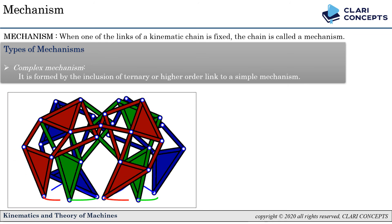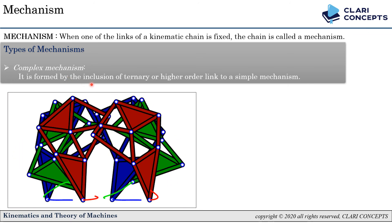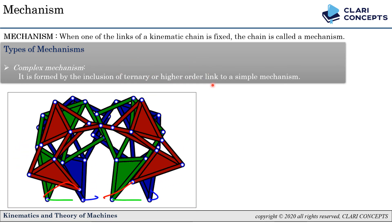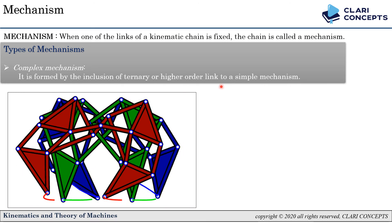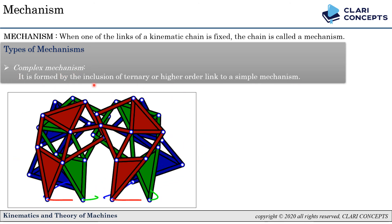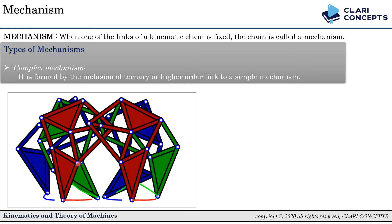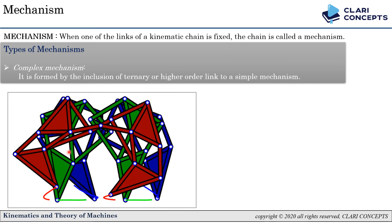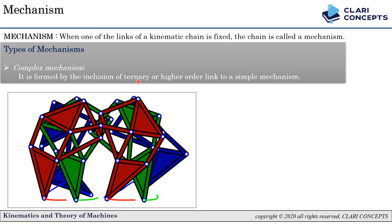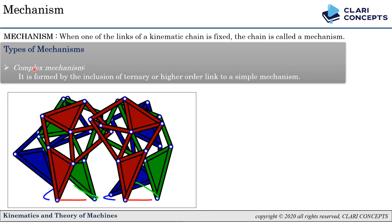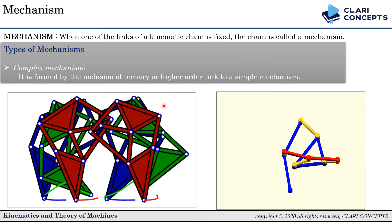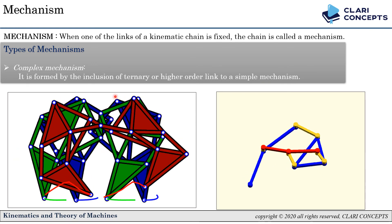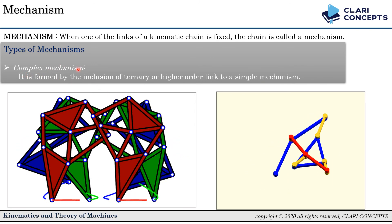A complex mechanism is one where ternary or higher-order links are included in what would otherwise be a simple mechanism. In this leg mechanism you can see many ternary links present. Another example has a ternary link acting as a fixed link. The presence of ternary or higher-order links classifies these as complex mechanisms.